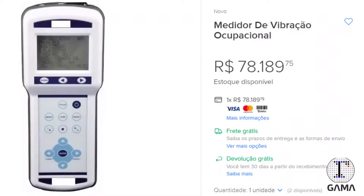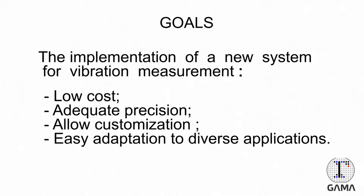Vibration meters are widely available on the market. However, they are very expensive and generally available in a closed form, where the user has few possibilities of configuration. As a result, the measurement tool does not always fit the user's needs. The implementation of a new system for vibration measurement offers a native tool of low cost, with adequate precision and that allows customization regarding the number of sensors to be used, facilitating the adaptation of the tool to the most diverse applications.